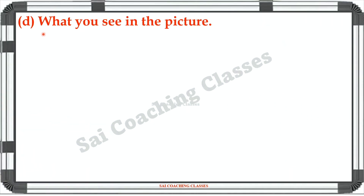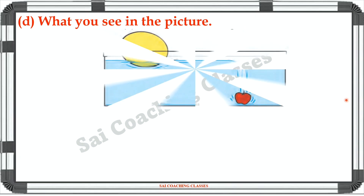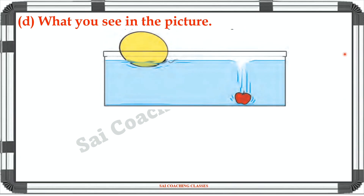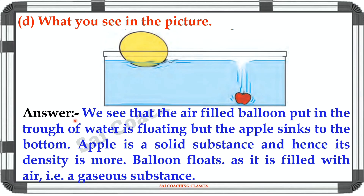Question C: What do you see in the picture? Answer: We see that an air-filled balloon put in a trough of water is floating, but the apple sinks in the water. Apple is a solid substance and hence its density is more. The balloon floats as it is filled with air, which is a gaseous substance.